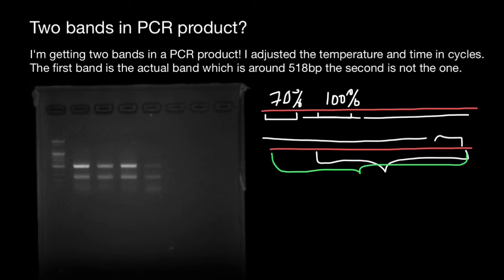So how to get rid of unspecific product? We can raise annealing temperature during PCR cycle by 1 to 2 degrees Celsius.